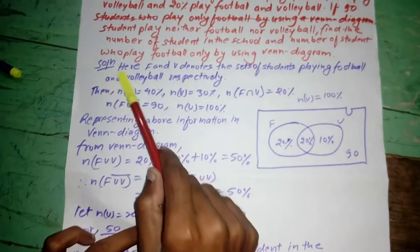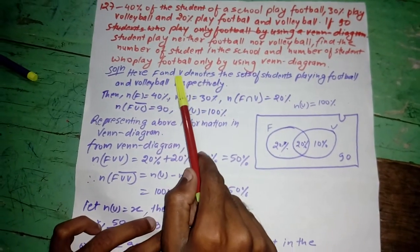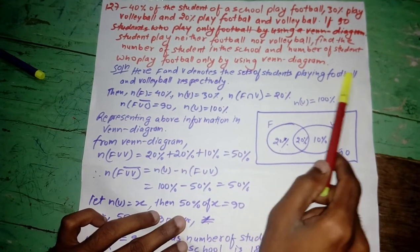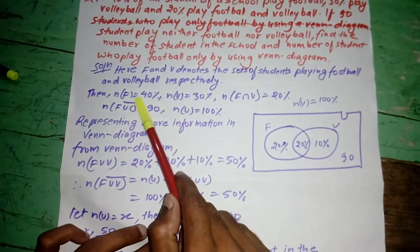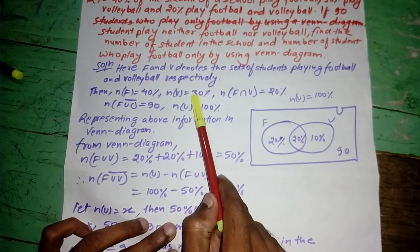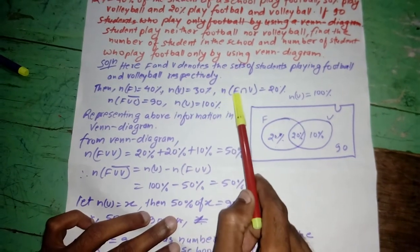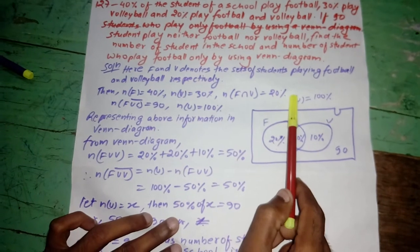Solution here. Here F and V denote the set of students playing football and volleyball respectively. Then n(F) is equal to 40%, n(V) is equal to 30%, and n(F∩V) is equal to 20%.